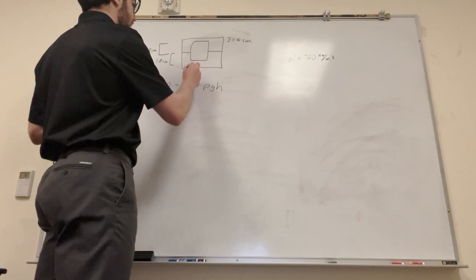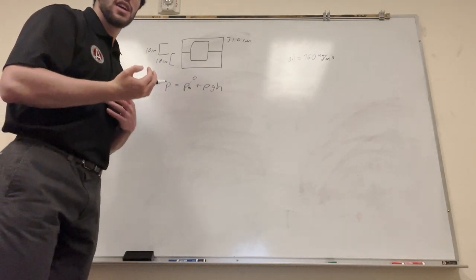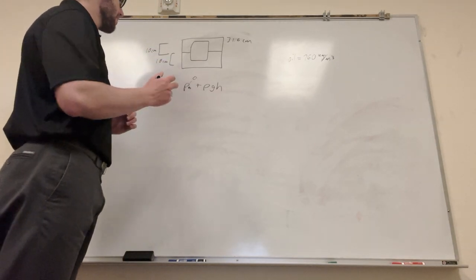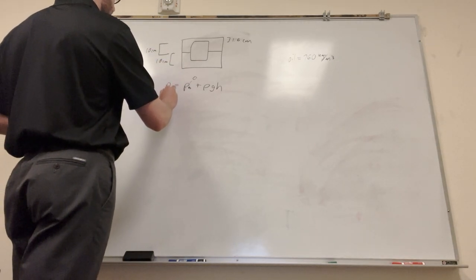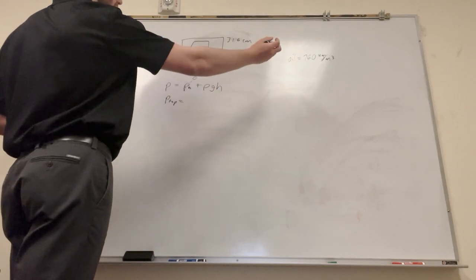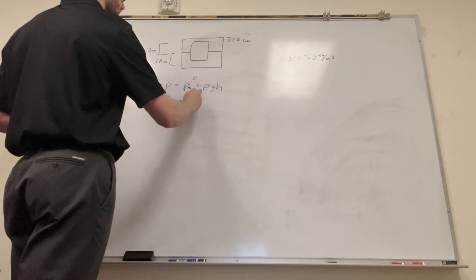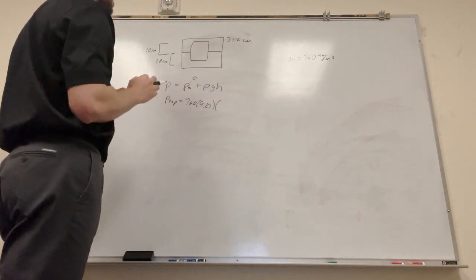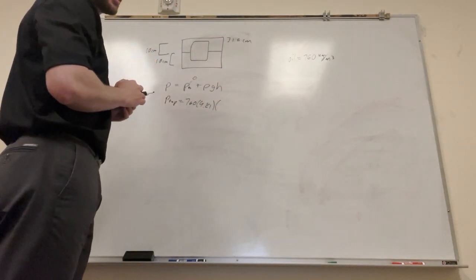So because we're doing gauge pressure, we don't need to worry about this because that would be atmospheric pressure, and the definition of gauge pressure is without atmospheric pressure. So then we end up with this, so the pressure at the top is equal to the density of oil, which is given to us, so it's gonna be 760 times gravity, 9.81 times the height.